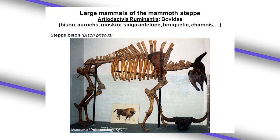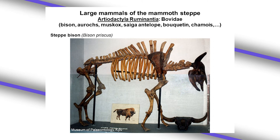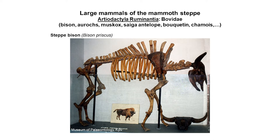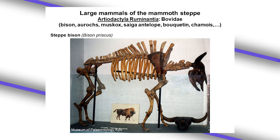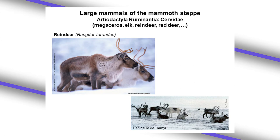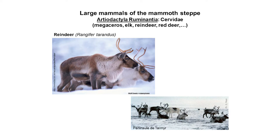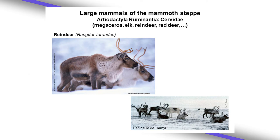Herbivores belonging to the Ruminantia are very numerous in the upper Pleistocene, notably the bovid family represented by the steppe bison, but also other bovids such as the saiga antelope now known in central Asia. Cervids bearing antlers, not horns, are also known across the Pleistocene — notably the reindeer, red deer, and larger deer such as Megaloceros or elk.